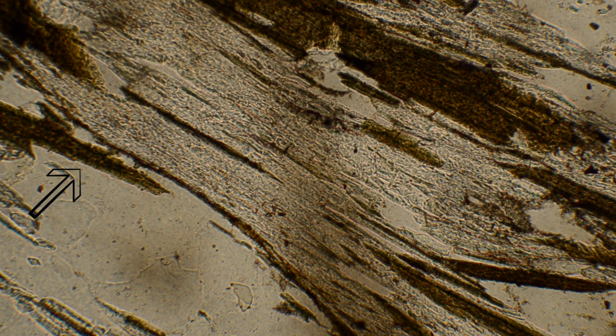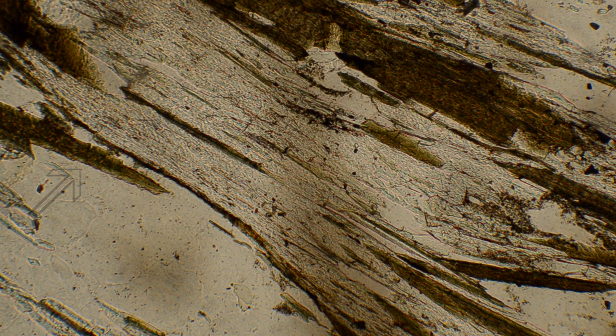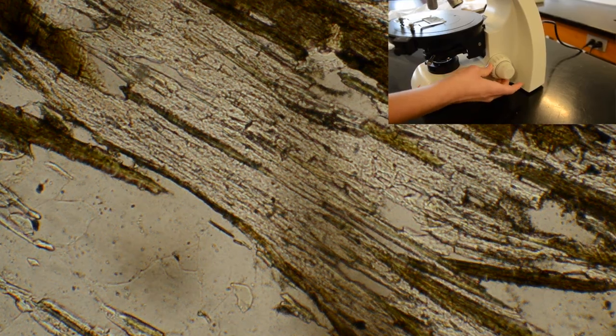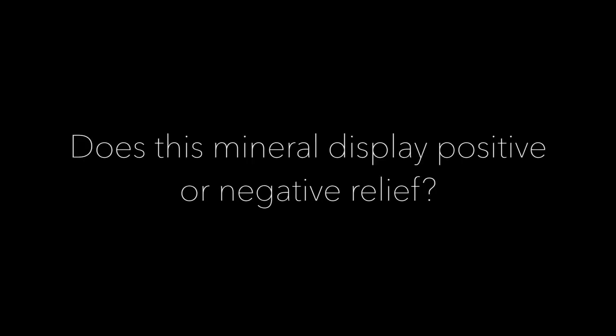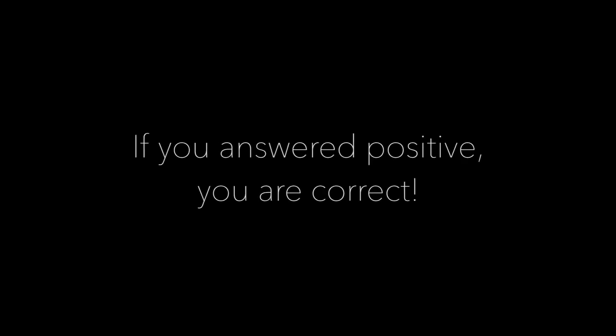Now, let's take a look at a petrographic thin section instead of a grain mount. Let's concentrate on the brown mineral on the left. Now, observe the direction of movement of the Becke line as I lower the stage. Does this mineral display positive or negative relief? If you answered positive, you are correct.